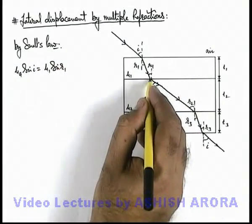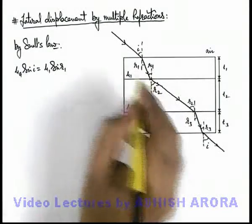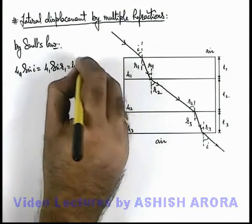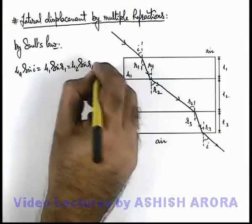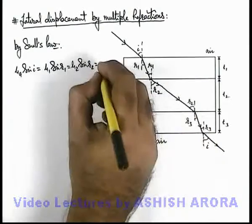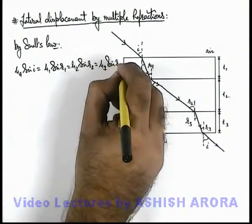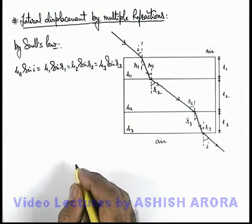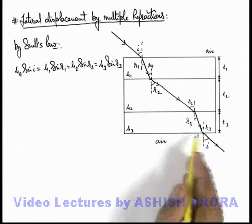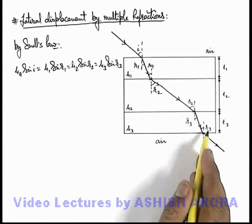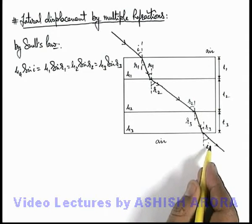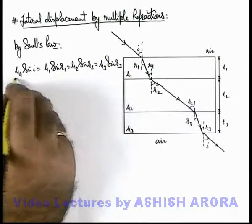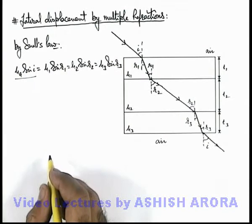And for the second interface we can write μ1 sin r1 is equal to μ2 sin r2, and the same is equal to, for the third interface, we can write μ3 sin r3, as everywhere it remains constant. So at the last interface, μ3 sin r3 must be equal to μ of air into sine of emergence angle, so it must be equal to the incidence angle only.